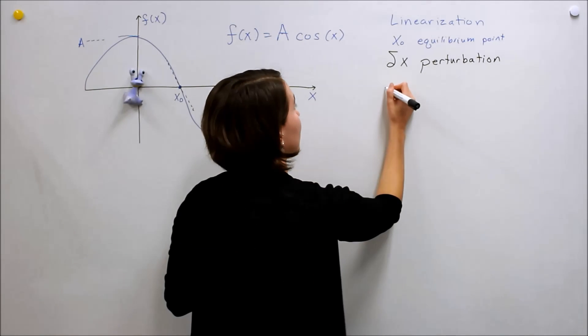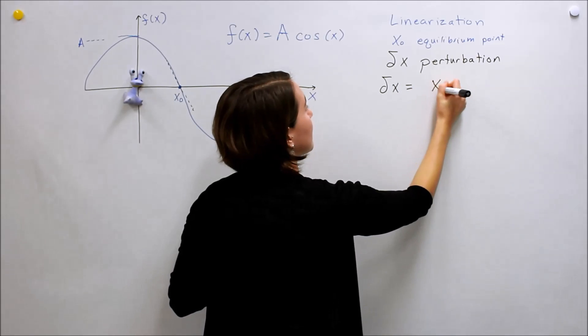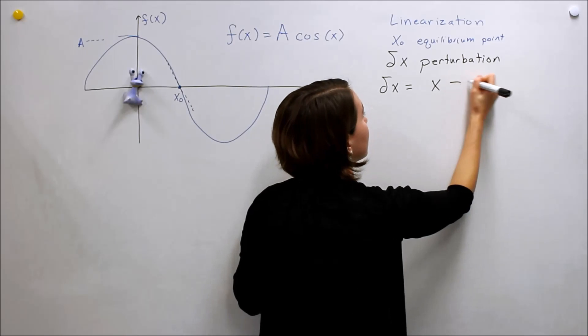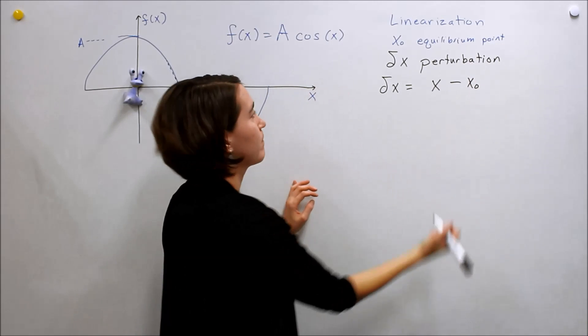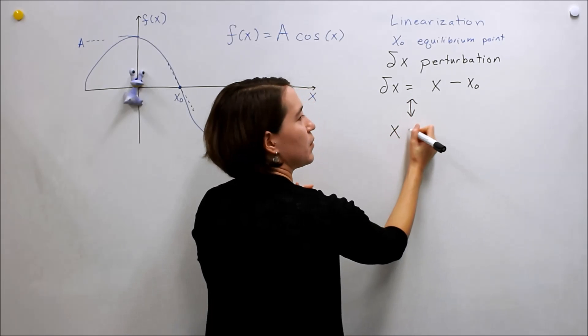And we define δx, the perturbation signal, as the x variable we had before minus our equilibrium point. And this is equivalent to, you just move things around.